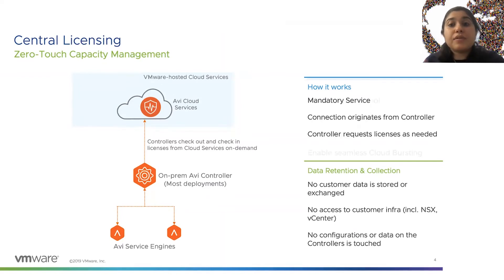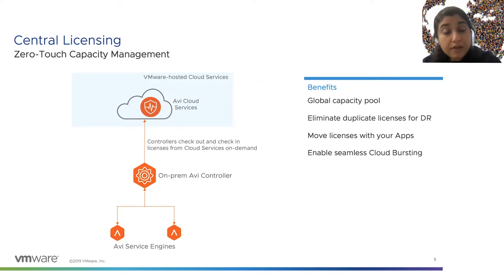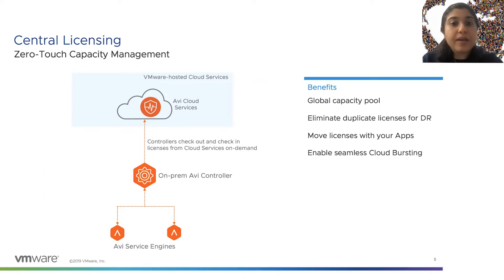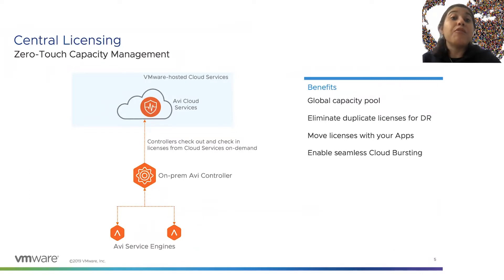What that gives you is peace of mind, because the central license service is simply managing licenses for you globally. This enables benefits not previously possible: you can manage your capacity globally without going into individual sites. You can eliminate duplicate licenses for disaster recovery — if an active site goes down, its licenses automatically move to the standby site, reducing downtime and manual intervention. Think of your licenses moving along with your apps. You can seamlessly enable cloud bursting, so load balancing licenses can programmatically move to the cloud along with your applications, eliminating manual provisioning.